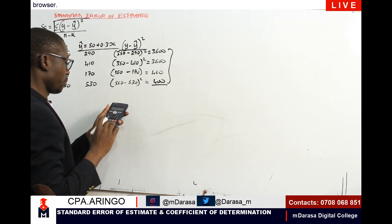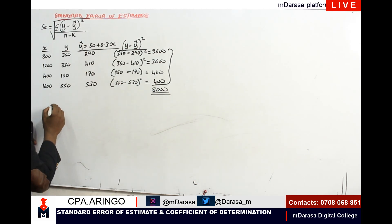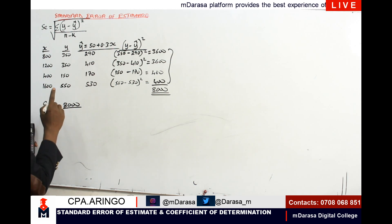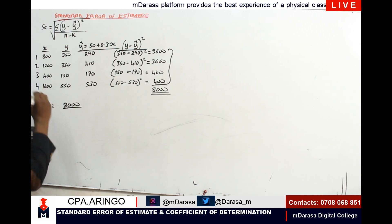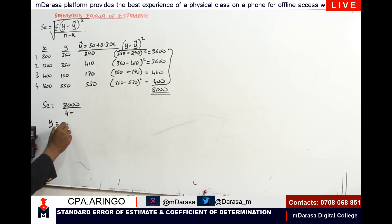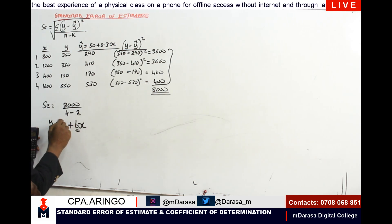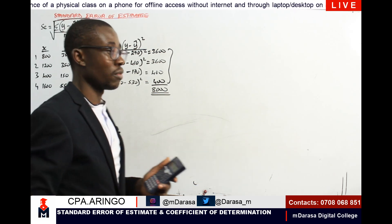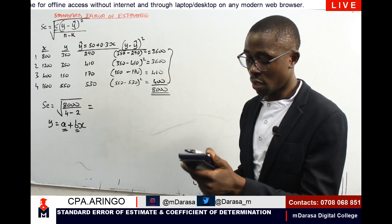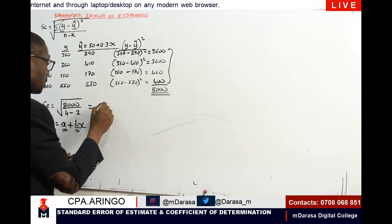Summing these up: 3600 + 3600 + 400 + 400 = 8000. Therefore the standard error = √(8000 / (N − K)) = √(8000 / (4 − 2)) = √(8000 / 2) = √4000 = 63.25. So our standard error is 63.25.